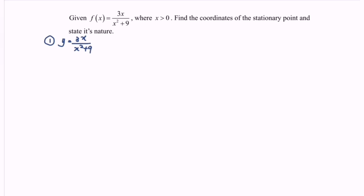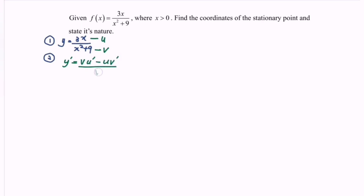Step two is to find the first derivative. Here we have a quotient, so we let u and v accordingly, then apply the quotient rule. The formula is: y′ = (v·u′ − u·v′) over v².